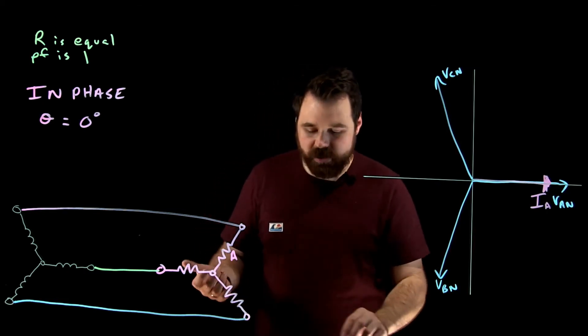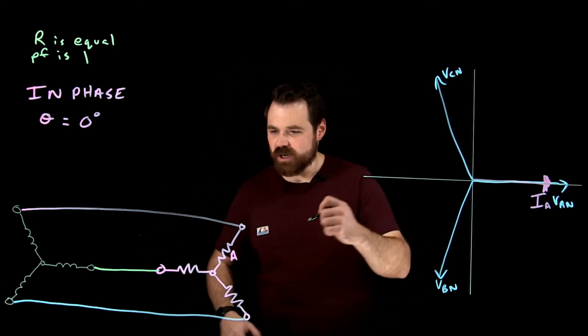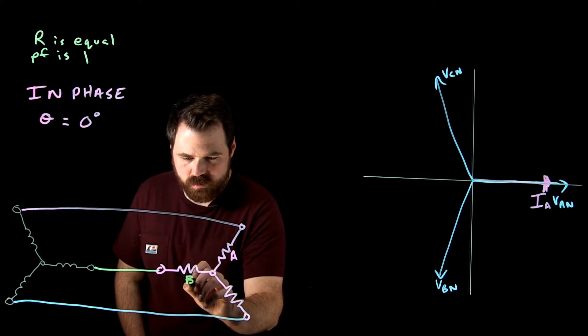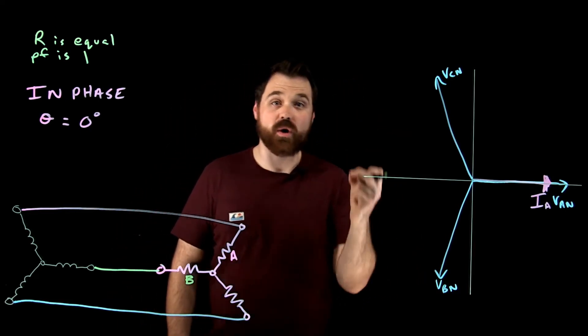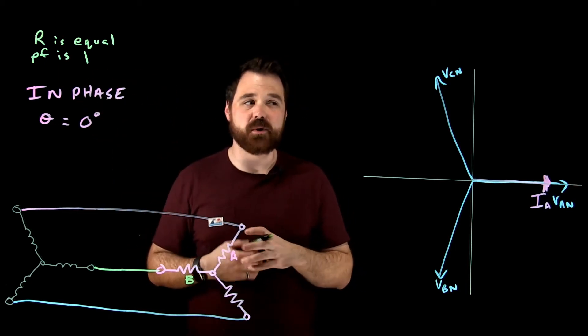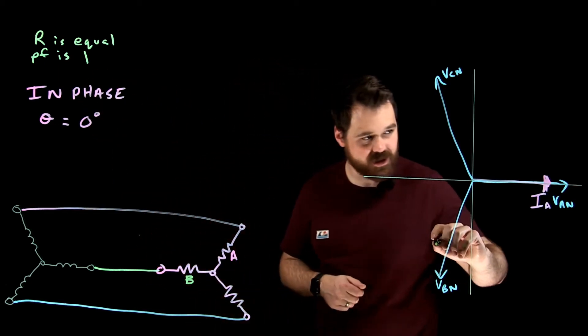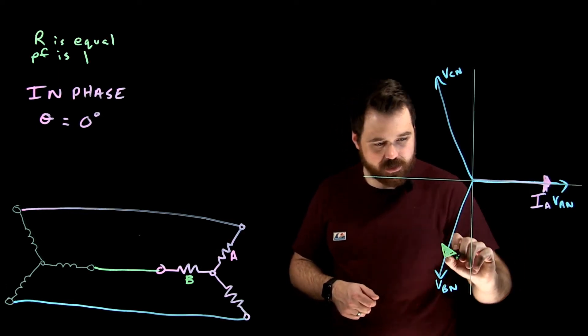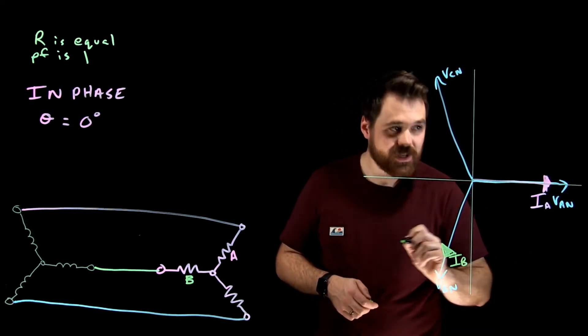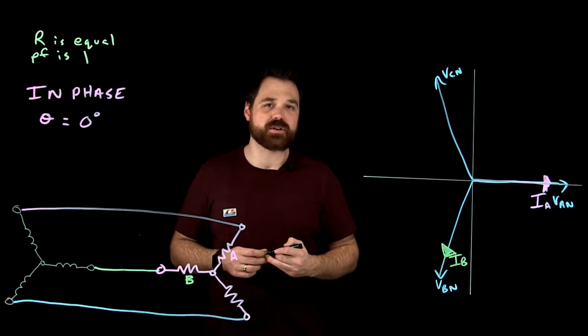Now we can do the same thing with all three of them. So here was phase B on this particular circuit. Well, phase B, the current is going to be in phase with the voltage. So what that means is down here, my current is I B in phase with that voltage.